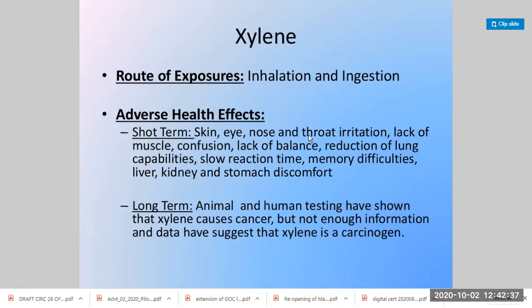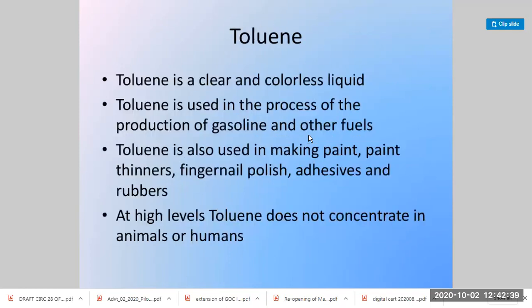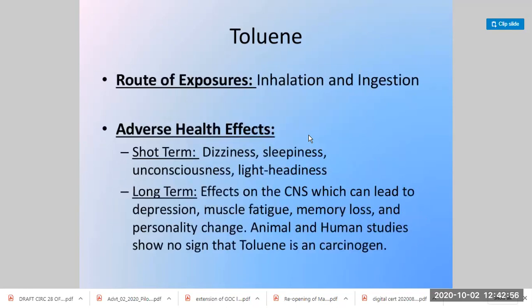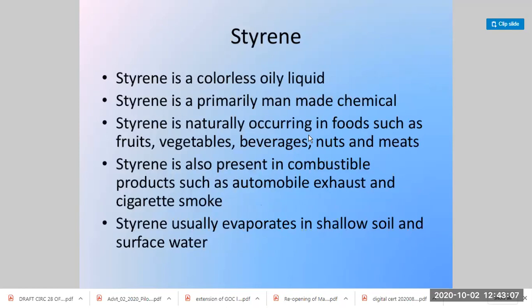Toluene is a clear, colorless liquid produced in the production of gasoline and used for making paints and thinners. It is highly volatile but does not accumulate in animals. Adverse effects include dizziness, sleepiness, and unconsciousness. Long-term effects are muscle fatigue, memory loss, and personality change. It has not yet been identified as carcinogenic.